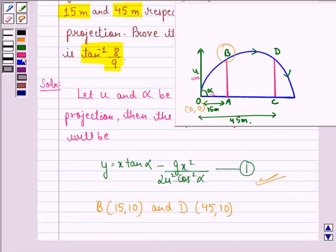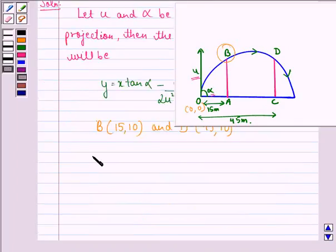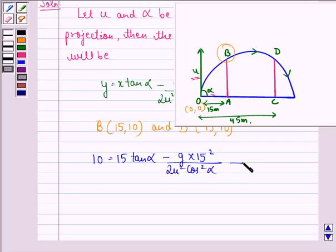So it must satisfy the equation of the projectile. Therefore 10 should be equal to 15 tan alpha minus g into 15 square divided by 2u square cos square alpha, and this we call equation 2.